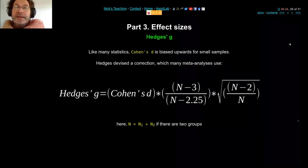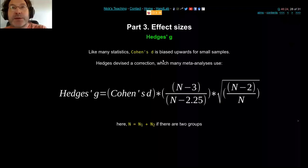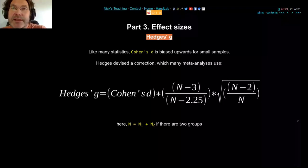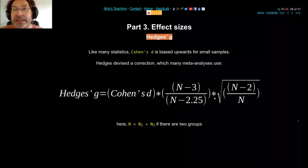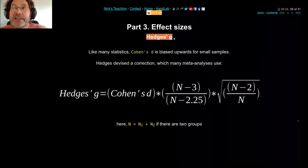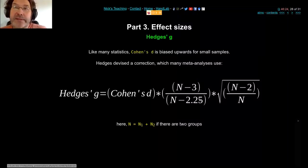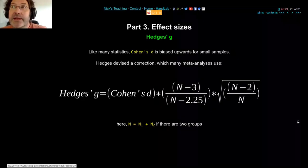In meta-analysis you might start with a T value in a paper, convert it to Cohen's D, and some meta-analyses then use Hedges' G — another correction of Cohen's D based on sample size. You multiply Cohen's D by a correction factor that depends on the number of subjects. With a lot of data, Cohen's D and Hedges' G are the same; with very small samples, Cohen's D is bigger than Hedges' G. You can always convert between them as long as you know the number of subjects.